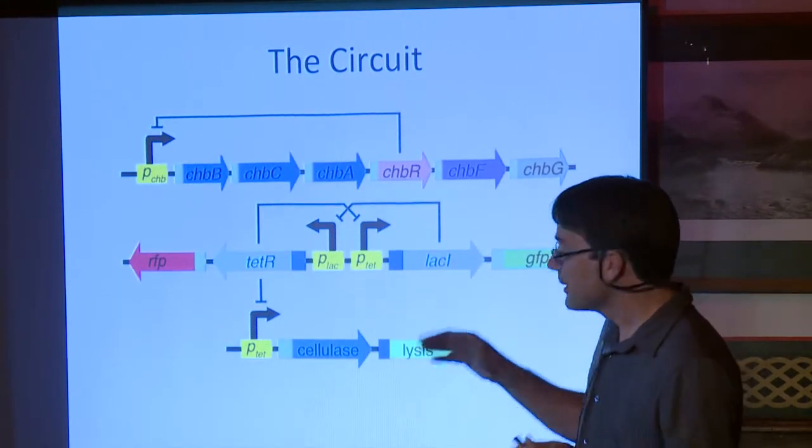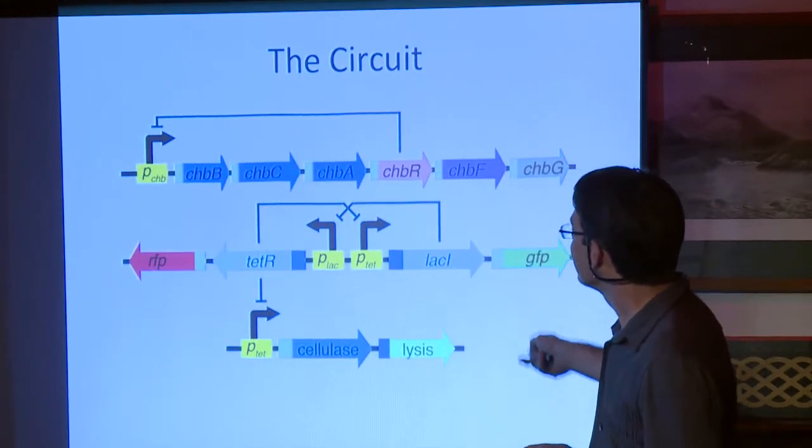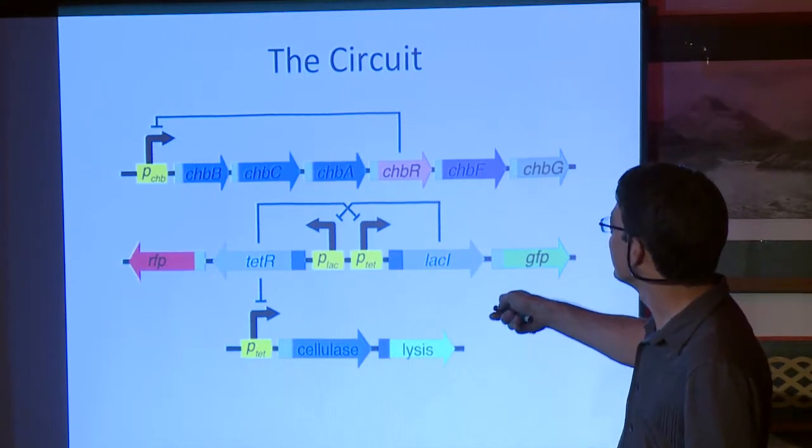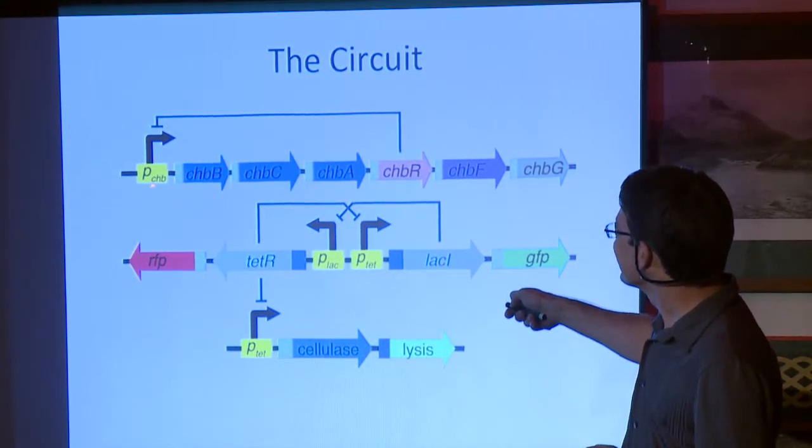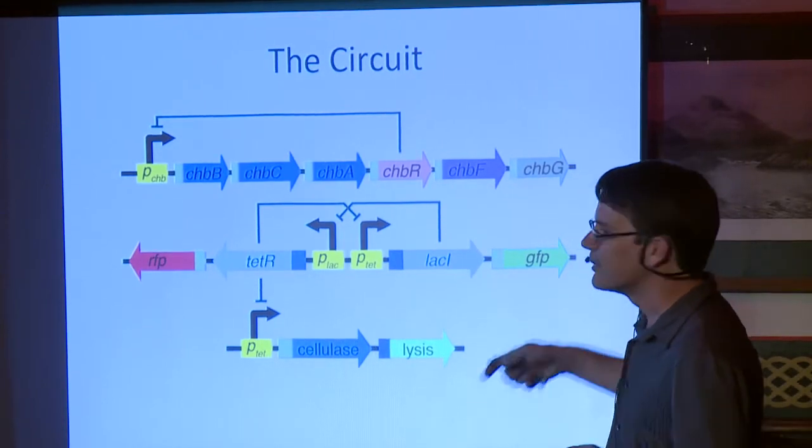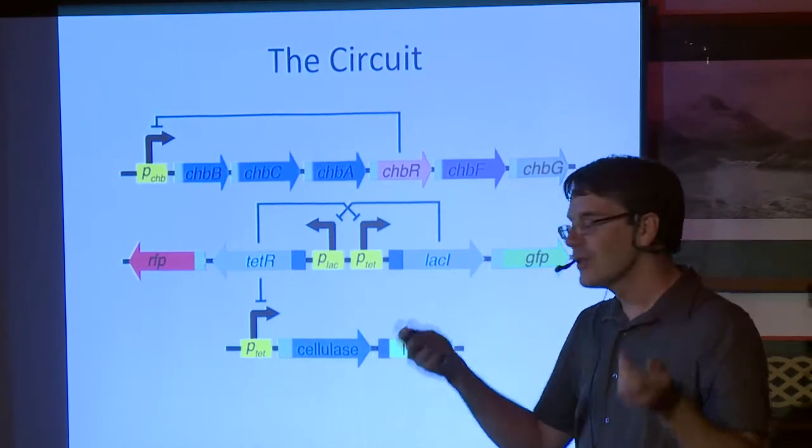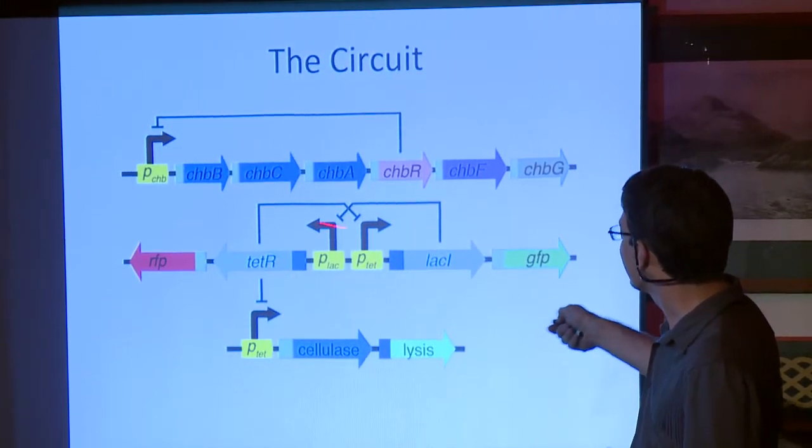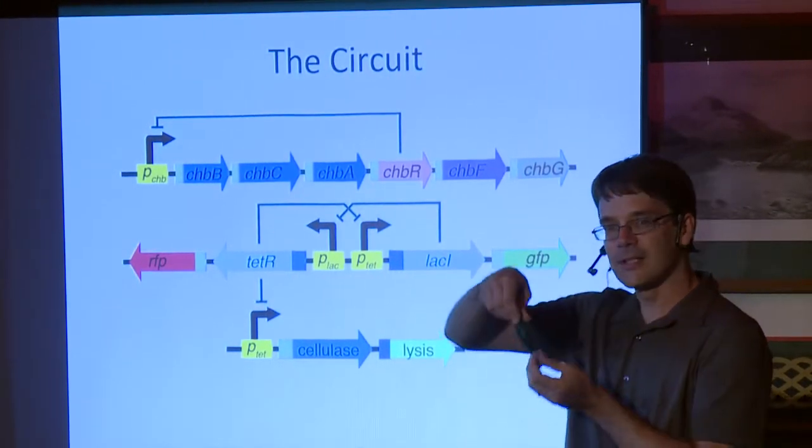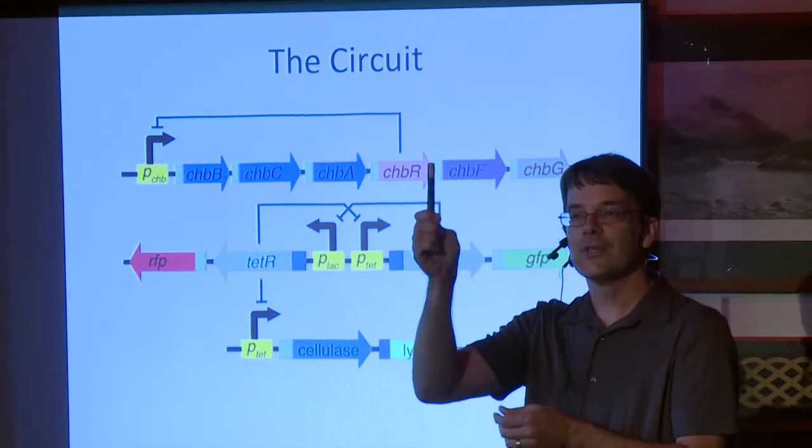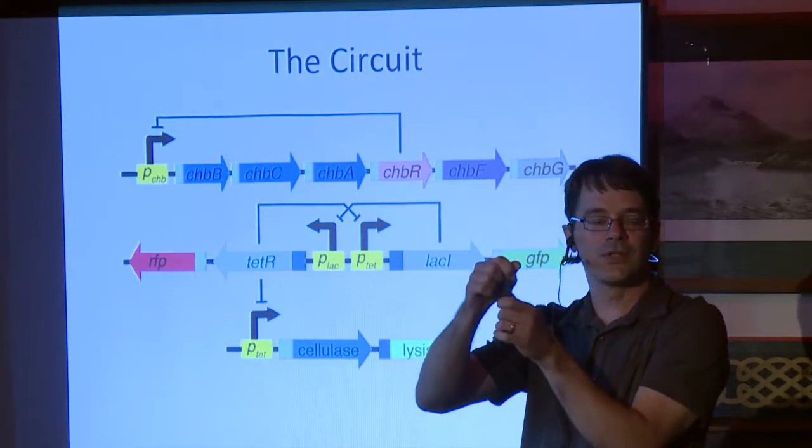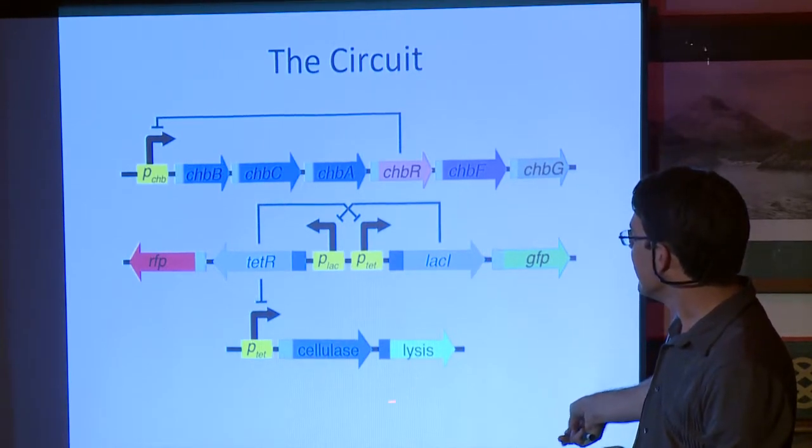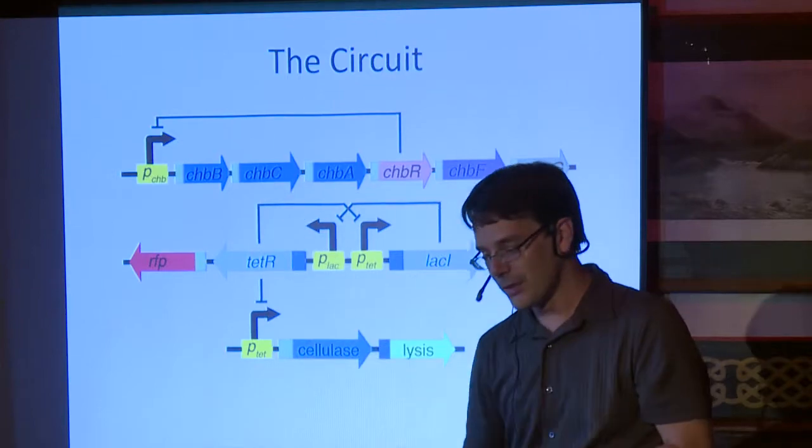There's a circuit. I know this is being recorded. I don't want to put too much on here because my postdoc will be really mad. I told everybody how that works, and he hasn't published this yet. But basically, the idea is that there's a bunch of genes that do the import of the simple sugar and the digestion. There's a switch. So this thing turns off that side, and this thing turns off that side. So it's like a toggle switch, like a light switch. And you're either a producer, until you stochastically switch to a consumer. When you switch to a consumer, you make the enzyme, which is a cellulase, and a gene that makes it so that you occasionally, you eventually pop yourself.